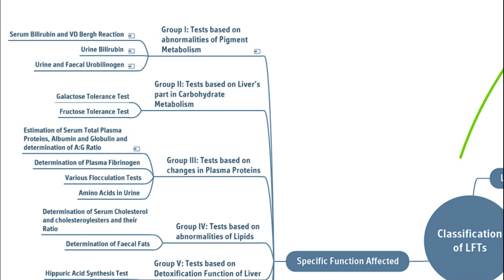In the 10-group classification: Group 1 — tests based on abnormalities of pigment metabolism (bilirubin) — includes serum bilirubin, urine bilirubin, and urine and fecal urobilinogen. Group 2 — tests based on liver's part in carbohydrate metabolism — includes galactose tolerance and fructose tolerance tests, since galactose and fructose metabolism specifically occurs in the liver.